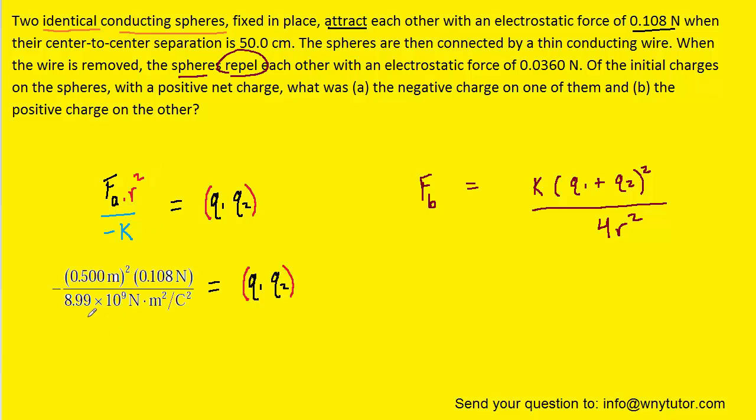And after plugging in and crunching it down, you should get negative 3 times 10 to the negative 12 for the product of q1 and q2. And that's a result that we're going to hold on to and use a little bit later on in the problem.